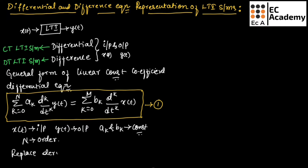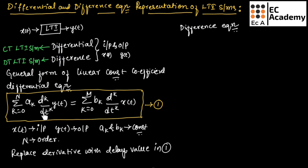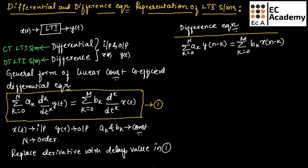Now, if we replace the derivative with the delay value in equation number 1, we will obtain the difference equation. So we can write: summation of k equals 0 to N of ak times y(n minus k), equal to summation of k equals 0 to M of bk times x(n minus k). This is the general representation of the difference equation, called equation number 2. Here we have replaced the derivative in equation 1 with the delay value to obtain the difference equation.